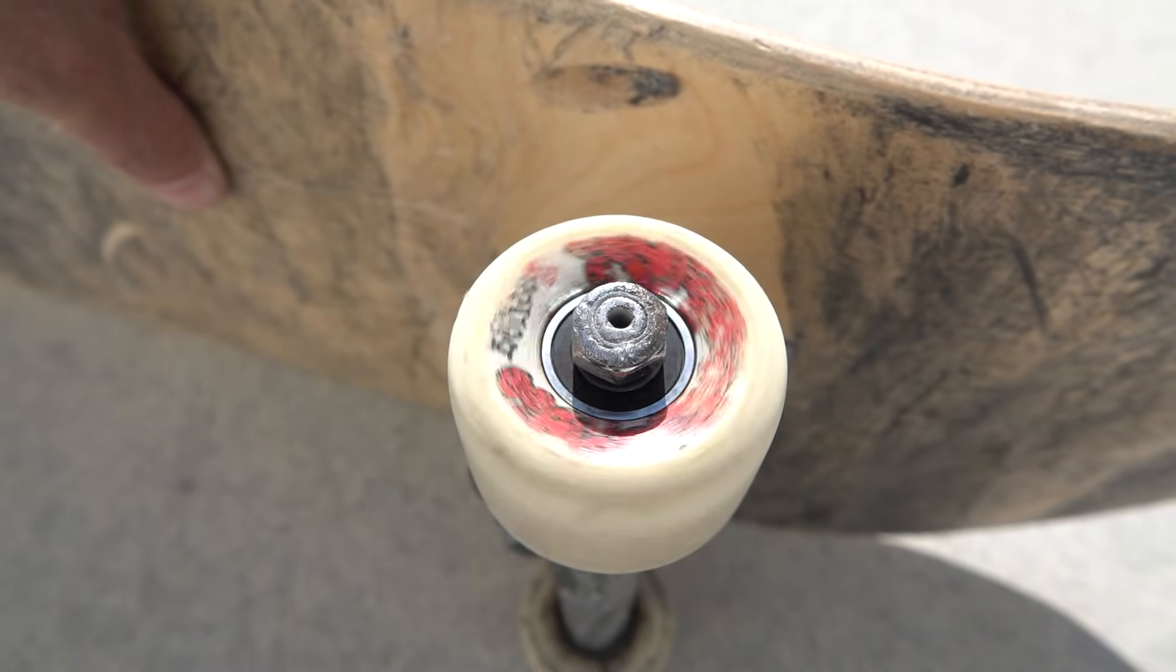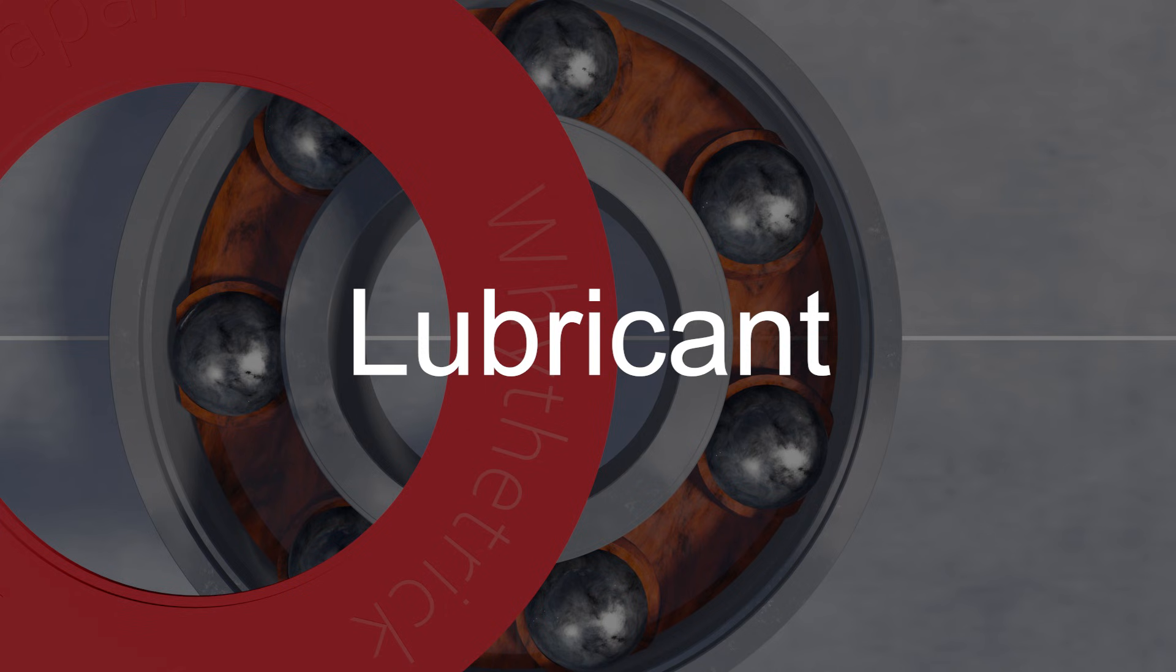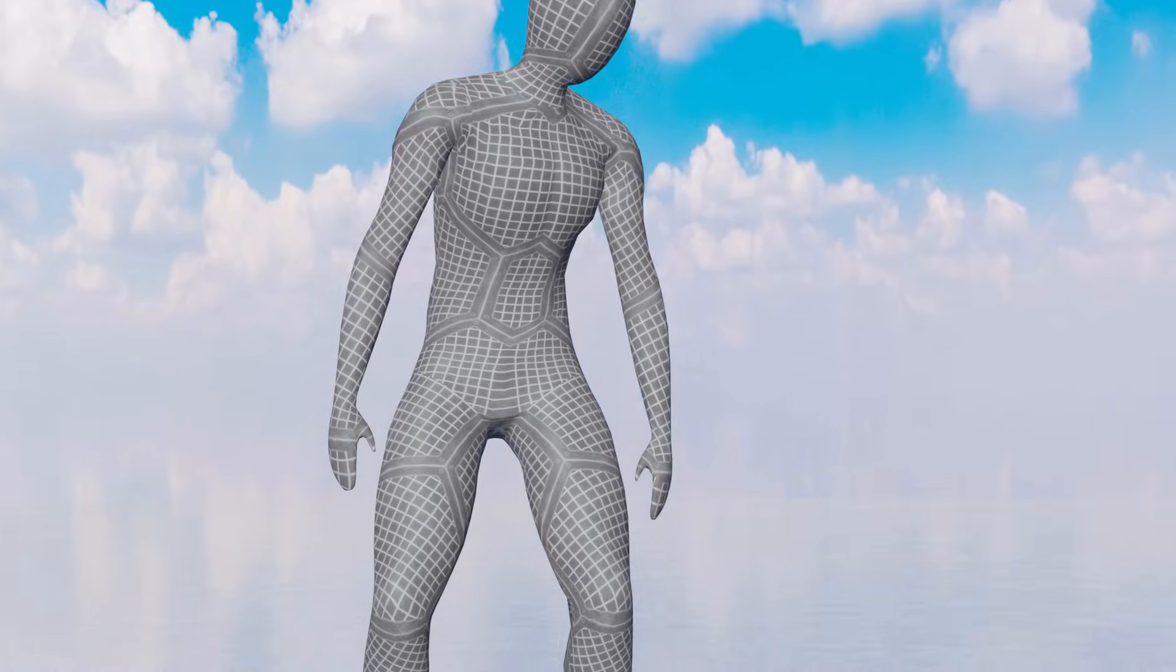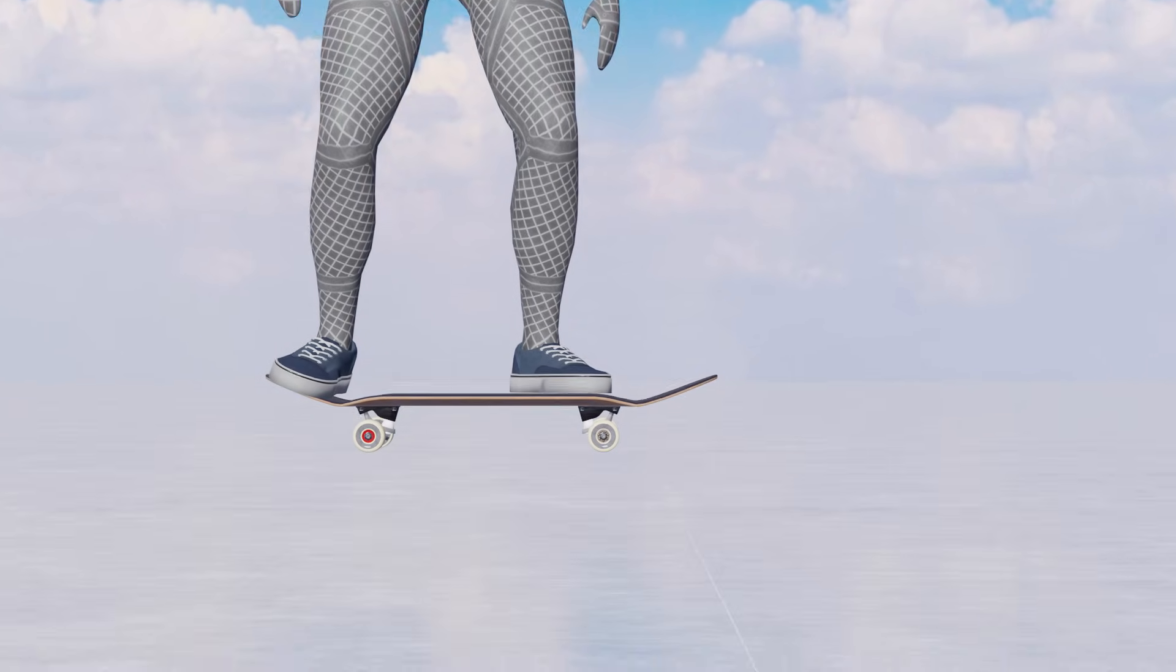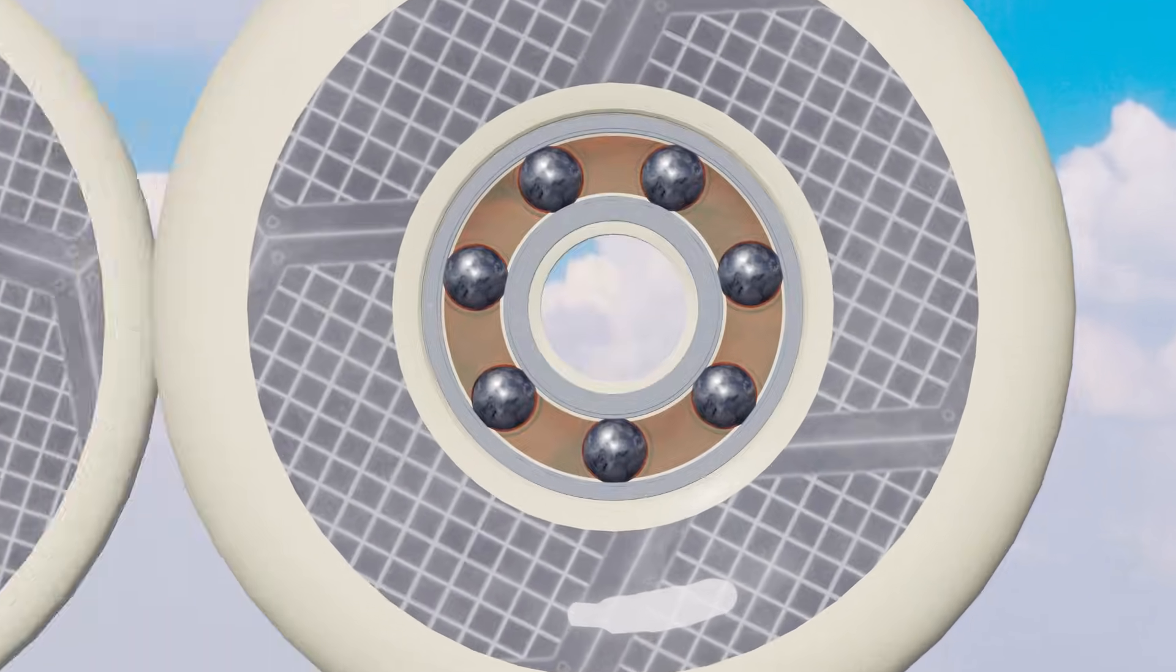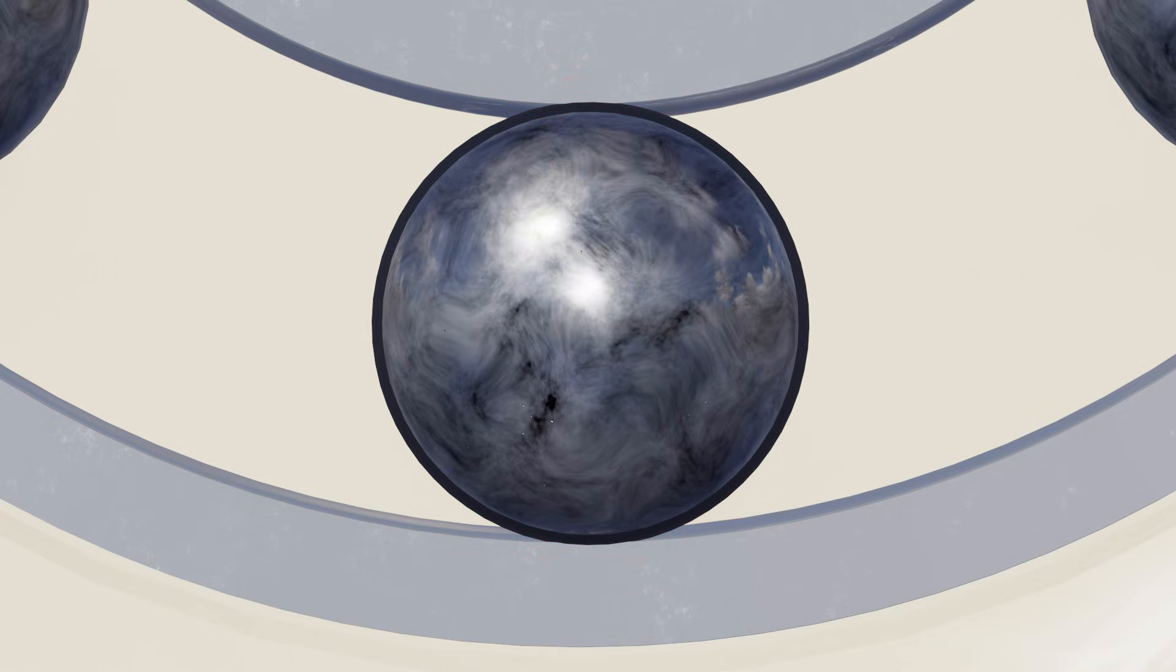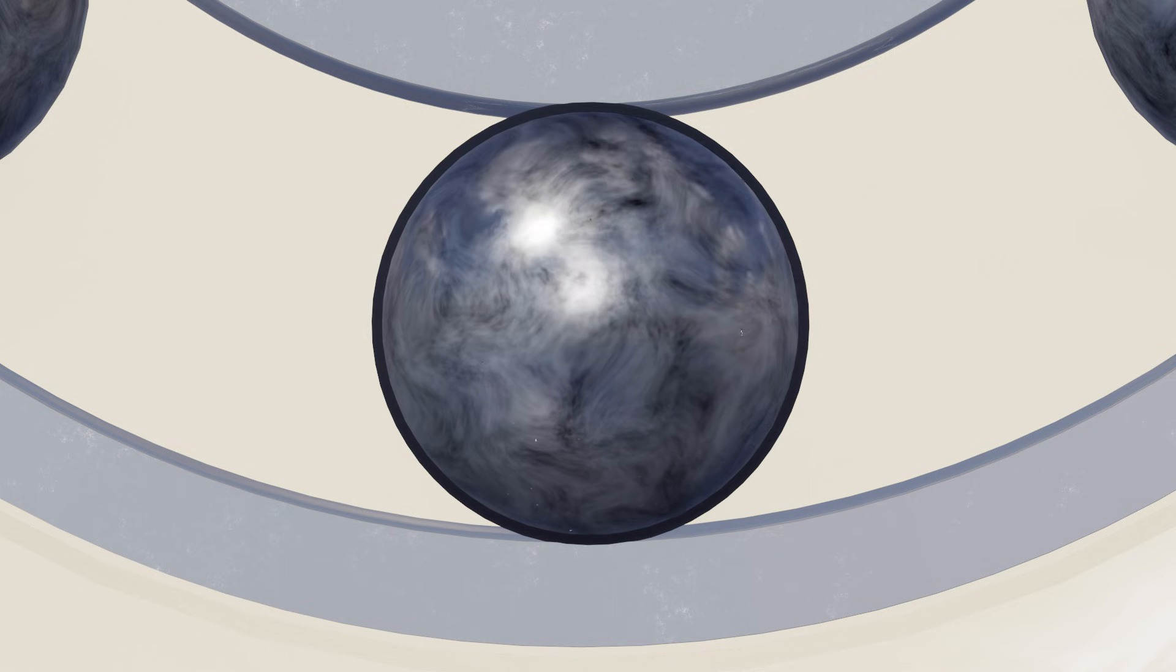Another factor that influences how smoothly bearings spin is the lubricant. In the first place, why do we even need it? When you stand on your board, friction occurs between the inner components of the bearings. Lubricants create a thin layer between these parts to reduce that friction.